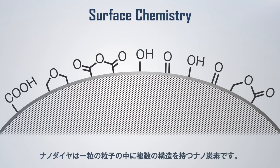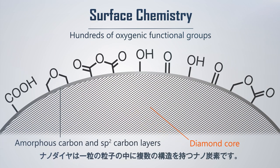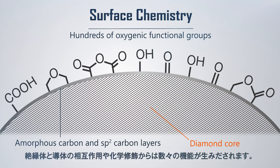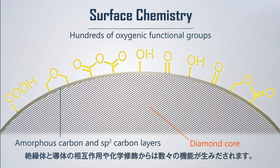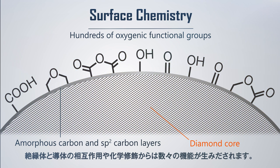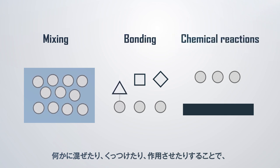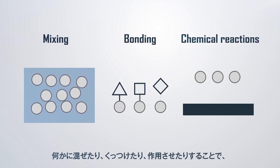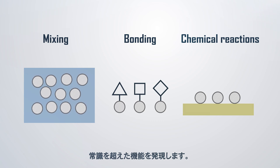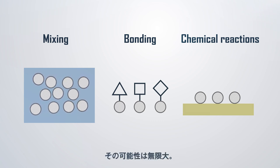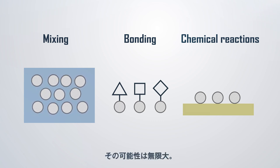A nano-diamond is a nanocarbon material which has multiple structures within a single particle. Various functions result from the interaction of the insulator and the conductor or chemical modification. Mixing or bonding nano-diamonds with other materials or inducing a chemical reaction can realize limitless potential exceeding all expectations.